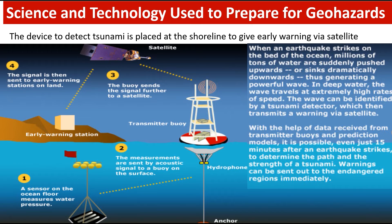A device to detect tsunamis is placed at the shoreline to give early warning via satellite. When an earthquake strikes on the bed of the ocean, millions of tonnes of water are suddenly pushed upwards or sink dramatically downwards, generating a powerful wave. In deep water, the wave travels at extremely high speed and can be identified by a tsunami detector, which transmits a warning via satellite. With data from transmitter buoys and prediction models, it is possible just 15 minutes after an earthquake to determine the path and strength of a tsunami, and warnings can be sent to endangered regions immediately.